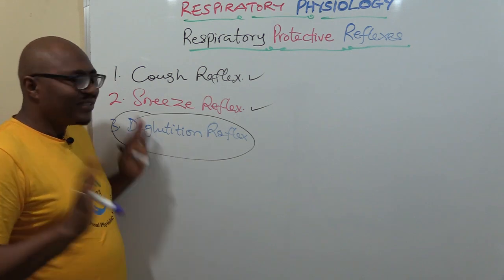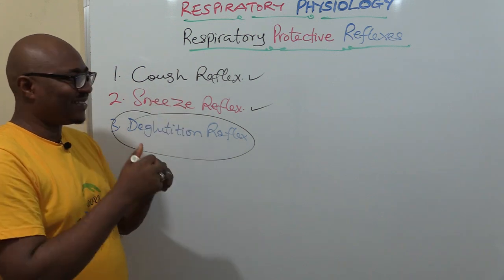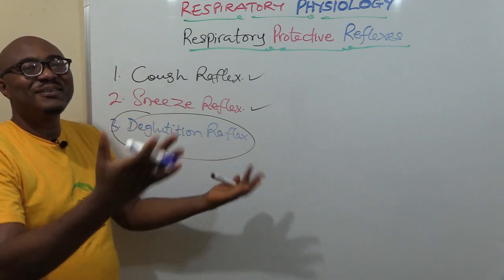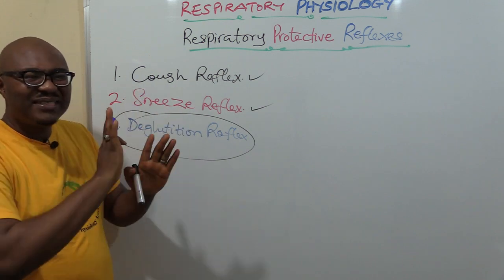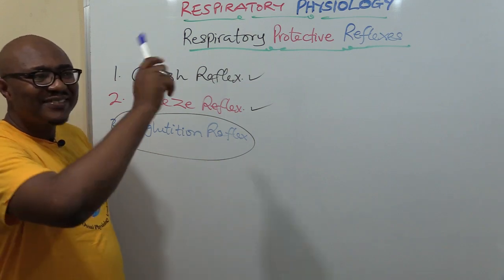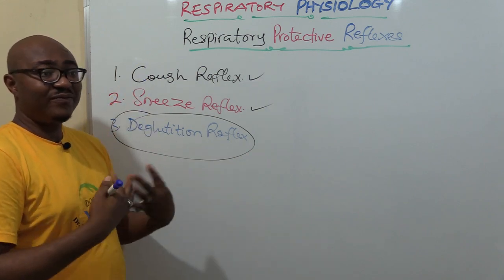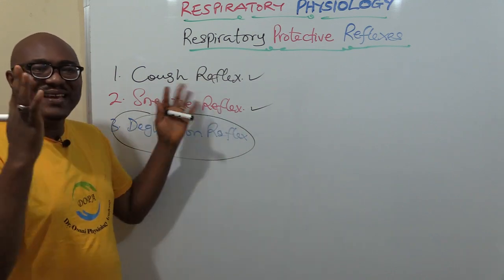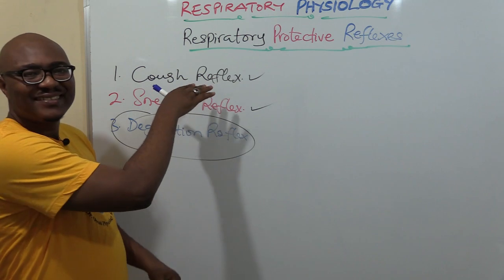Whenever you're talking about a reflex, think about the components of a reflex arc. You have receptors or sensors — they sense that something is going wrong and send a signal to the control center. Through efferent nerves, the control center sends signals to the effectors, which are muscles, to carry out the action that will protect the respiratory system.